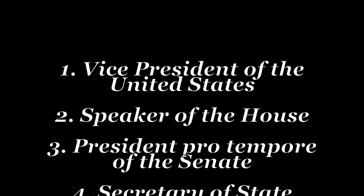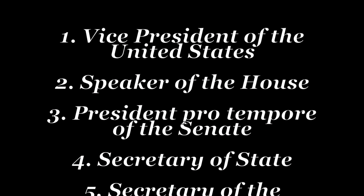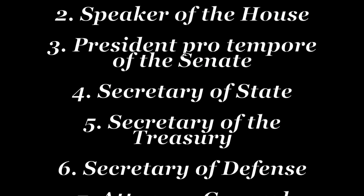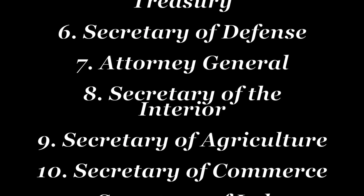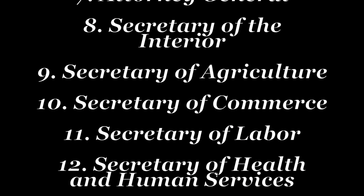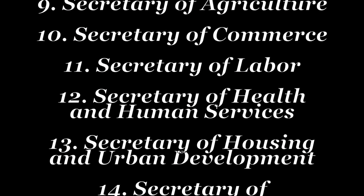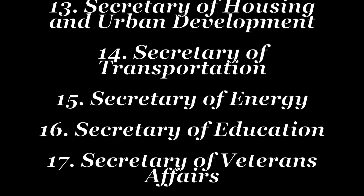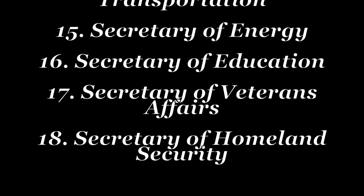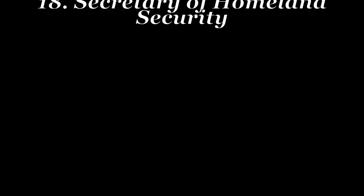So the current order is: Vice President, Speaker of the House, President pro-tempore, and then Secretary of State, Secretary of Treasury, Secretary of Defense, Attorney General, Interior, the Agricultural Secretary, Commerce Secretary, Labor, Health and Human Services, Housing and Urban Development, Transportation, Energy, Education, Veterans Affairs, and Homeland Security.